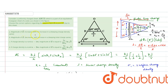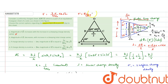Now coming to the options. Option A: magnitude of electric field increases with an increase in A keeping charge density constant. The formula derived is 7σ/(44ε₀)·ln√2, which does not directly depend on A if charge density is constant. Therefore, A is incorrect. Option B: magnitude of E decreases with increase in A keeping total charge same. Since σ = Q/A, if total charge is same and A increases, area increases, so σ decreases, and since E is directly proportional to σ, E also decreases. Therefore, option B is correct.